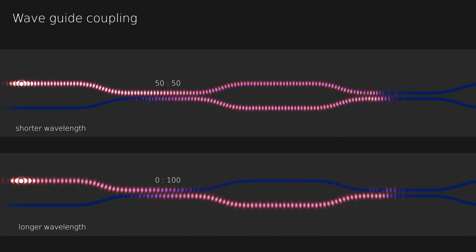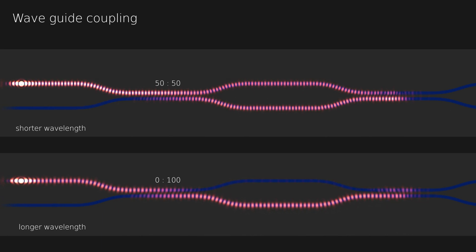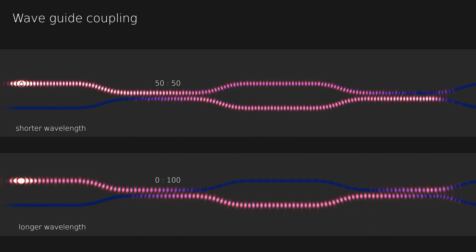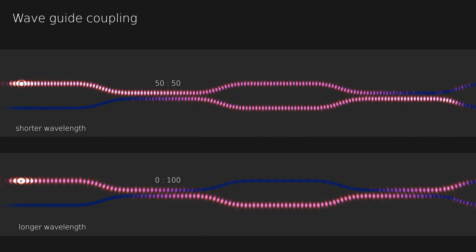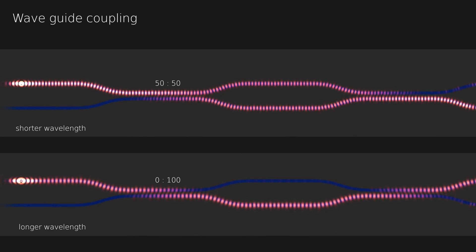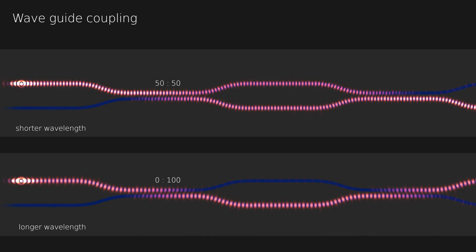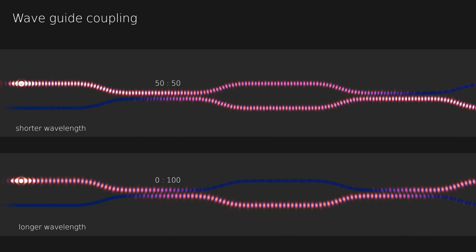The two simulations show how the same geometry can result in different splitting ratios depending on the wavelength. Note how the energy is routed differently through the setup.